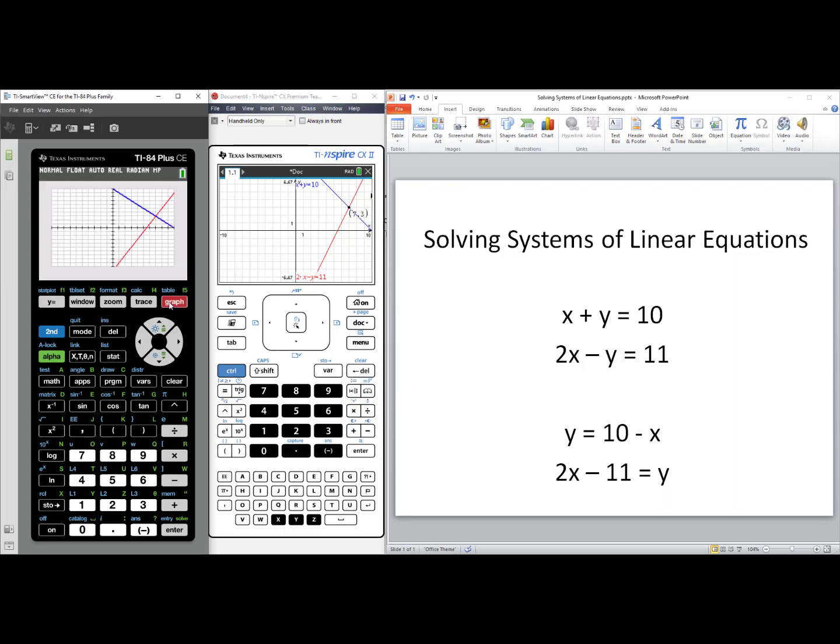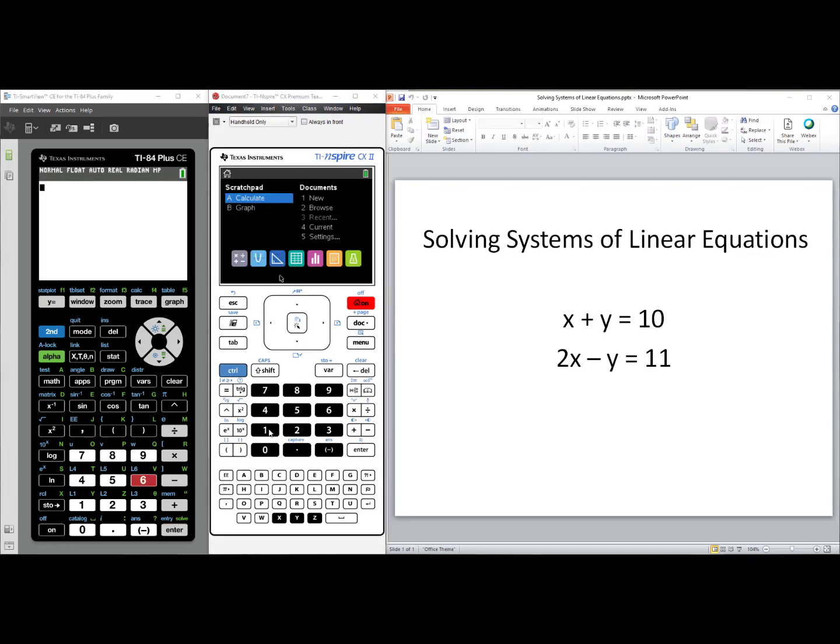To see the graph of our system, press Graph. Now use your Intersect tool by pressing 2nd, Trace, arrow down to number 5, Intersect. We press Enter on the first curve, Enter on the second curve, we press Enter once more, and we find our solution is at 73.